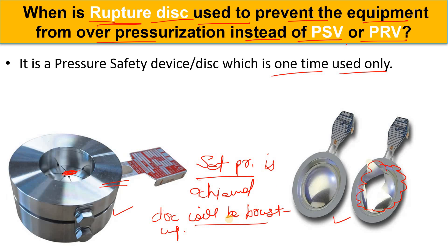In the case of a PSV, when the set pressure is achieved, the PSV will pop up — it will open. What it will do is simply release the pressure into the blowdown system or into the atmosphere.